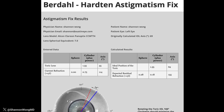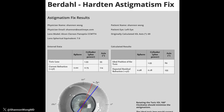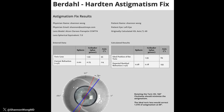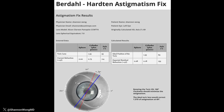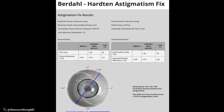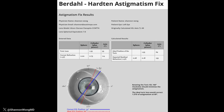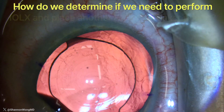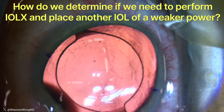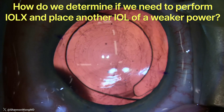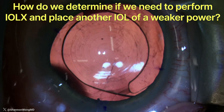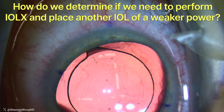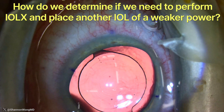Our plan is to perform reverse optic capture — capturing the optic in the anterior capsular opening while leaving the haptics inside the capsular bag. Performing reverse optic capture moves the IOL optic anterior to the anterior capsular leaflets, altering the effective lens position and thus affecting the refraction. To determine whether we need a lens exchange with a weaker-power IOL, I use the table on dr-hill.com, which allows surgeons to adjust IOL power based on the IOL being in the capsular bag versus the sulcus.